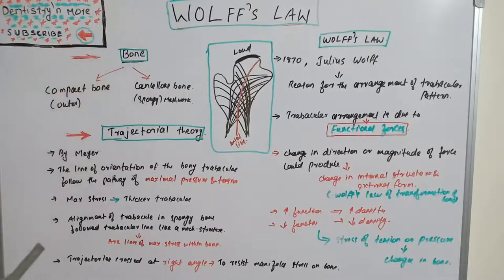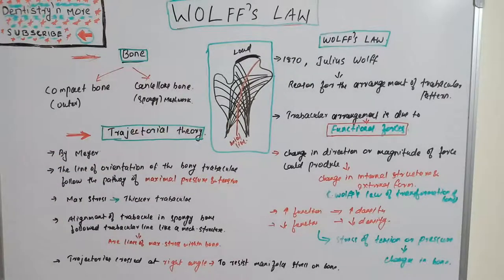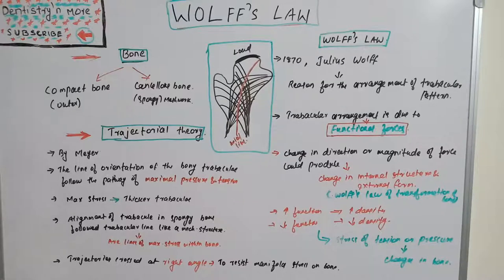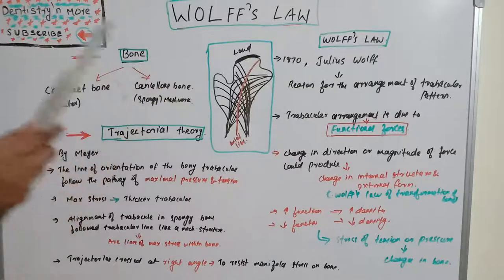Wolff's Law should be understood in accordance with the bone and trajectorial theory. First, we'll see what bone is. There are two parts of bone: the outer and thicker part, known as compact bone, and the other part is cancellous bone, which is inside the bone. Cancellous bone is very spongy and has a meshwork of trabeculae.